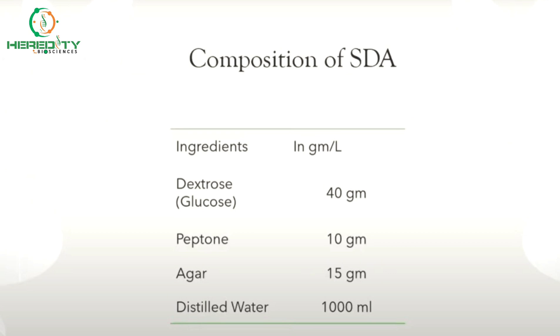Sabouraud Dextrose Agar is composed of three main ingredients: peptone, dextrose, and agar. Peptone is used as it supplies essential nutrients for fungal growth — enzymatic digestion of casein and enzymatic digestion of animal tissue — providing nitrogen and vitamin sources required for organism growth. And dextrose is added as the energy and carbon source.